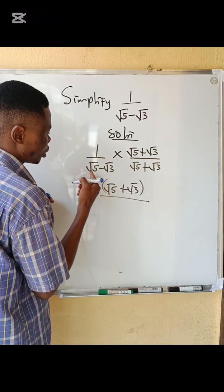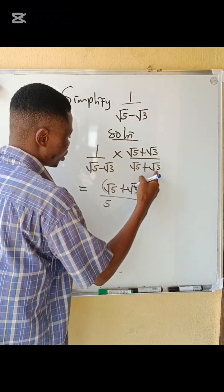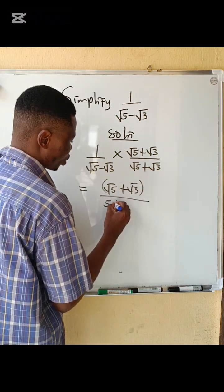gives you plus root 15. You move to the next one: minus root 3 times root 5 gives you minus root 15.